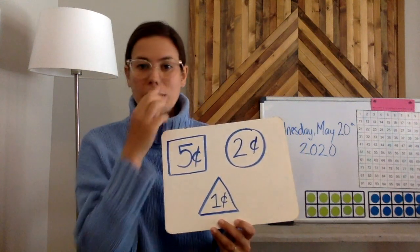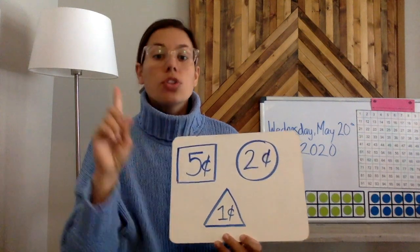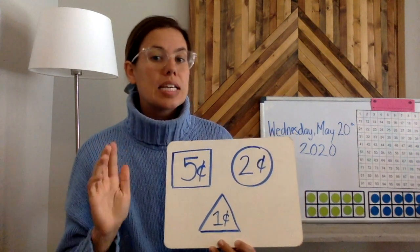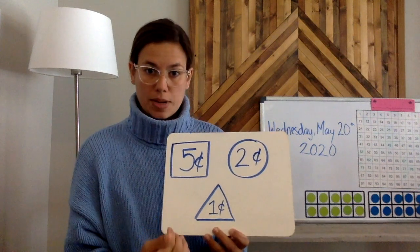So in your picture what you're going to have to do is include squares, circles, and triangles to equal 14 cents. So you're only going to have 14 cents to spend on your picture.